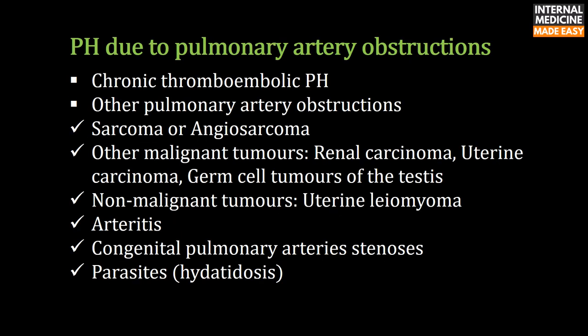Pulmonary hypertension due to pulmonary artery obstructions includes chronic thromboembolic pulmonary hypertension, other pulmonary artery obstructions like sarcoma or angiosarcoma, malignant tumors such as renal carcinoma, uterine carcinoma, and germ cell tumors of the testis, non-malignant tumors like uterine leiomyoma, arteritis, congenital pulmonary artery stenosis, and parasites like hydatidosis.